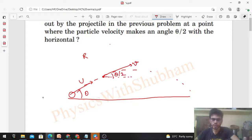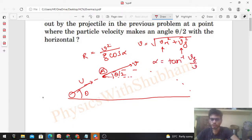So what will be the radius of curvature at this point? We will need v = √(vx² + vy²), where vx is the horizontal component of velocity and vy is the vertical component. Also, alpha is tan⁻¹(vy/vx).